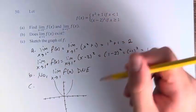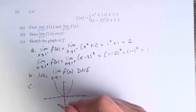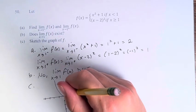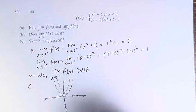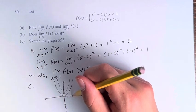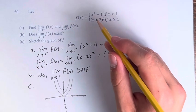So x squared plus 1, using the transformations we learned in the last chapter, means we move up one unit. And x minus 2 squared means we move to the right two units.